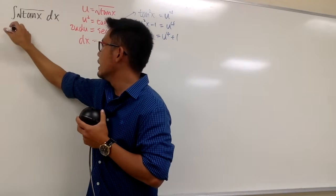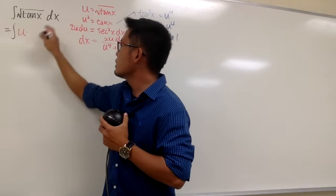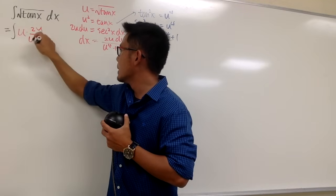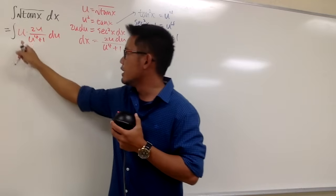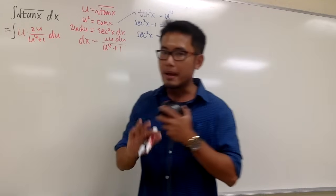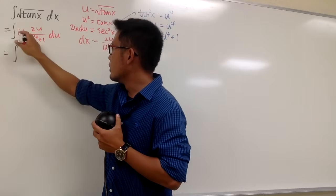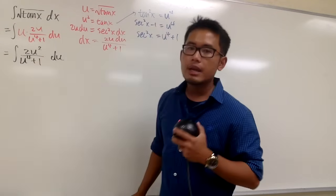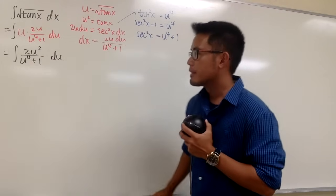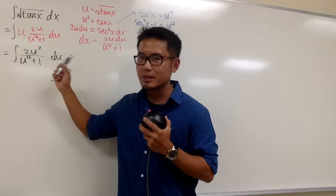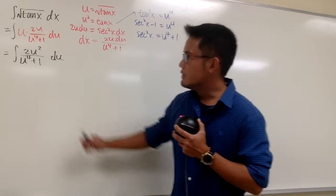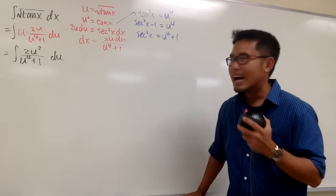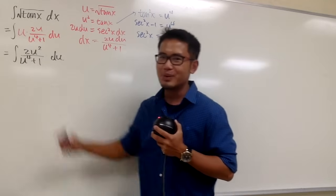So the integral of square root of tangent x is the same as u, and multiplying by dx gives us the integral of 2u squared over u to the fourth power plus 1, du. We have a rational function inside. Usually we'd try to factor the denominator and do partial fractions, but u to the fourth power plus 1 is factorable — don't factor it, because it's not going to be nice. If there's a request, I'll show you how. But I'm not going to factor it.